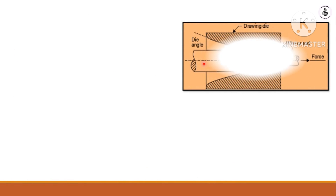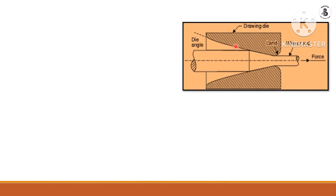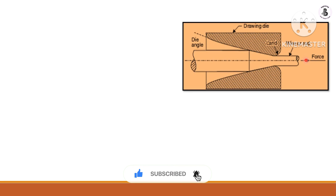You can see the basic setup for the wire drawing process. Here a drawing die is being used, and basically this die is made of hardened steel material. It is designed according to the required cross-sectional area of the product. The raw material is available on the left side and is forcefully pulled in one direction, converting it into a reduced cross-sectional area — in the form of wire or rod, depending on the product.